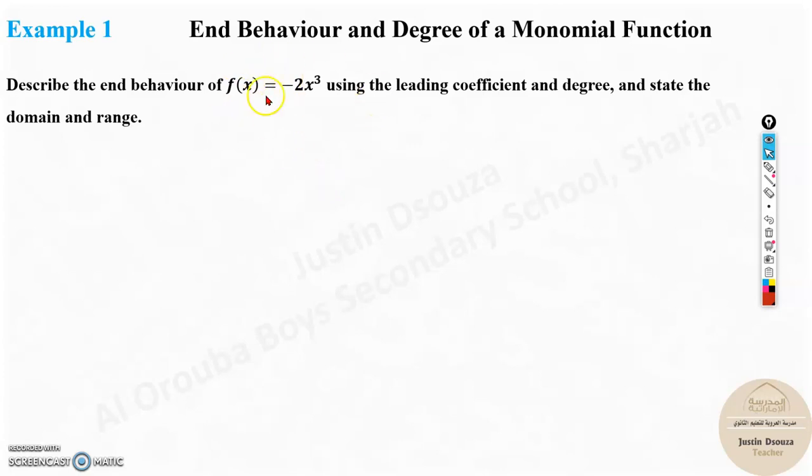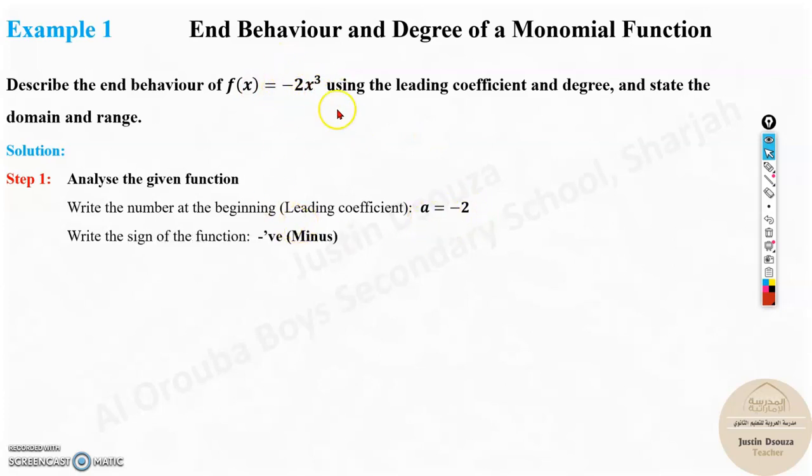The first step would be understanding this function. Analyze the given function. The leading coefficient is the number at the beginning. That's the leading coefficient. Now, that is -2. Then, what is the sign of this function? It's negative, minus. And what's the degree? It's a monomial function, there's no other term. So the degree is whatever power is mentioned. That's the degree, which is n = 3 (Odd).